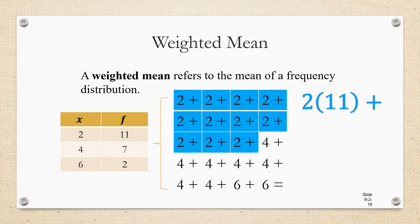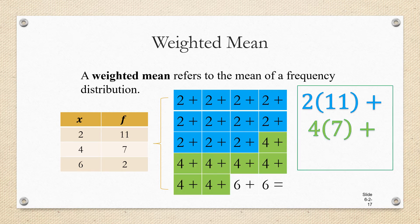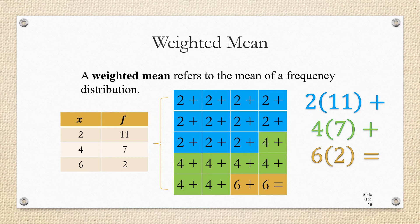Wouldn't adding up 11 twos just be the same as multiplying 2 times 11? And instead of adding up 7 fours, we could multiply 4 times 7. And instead of adding up 2 sixes, we can multiply 6 times 2.